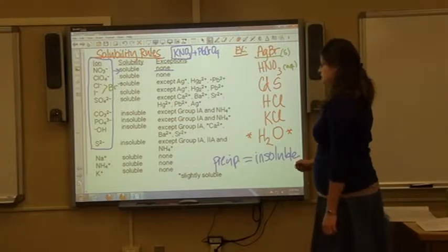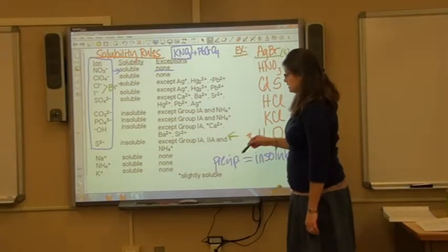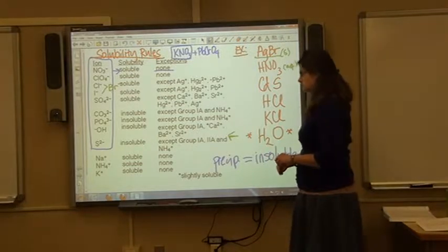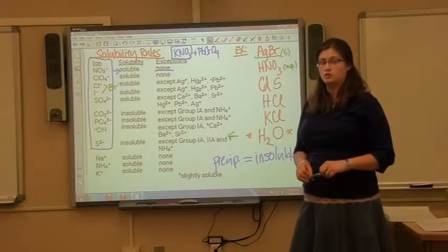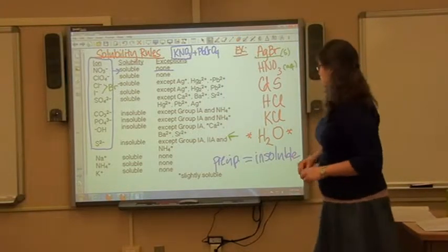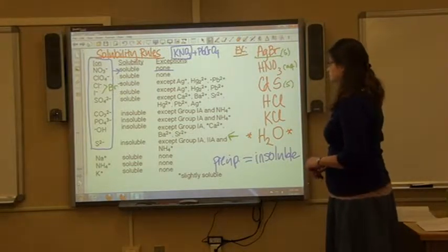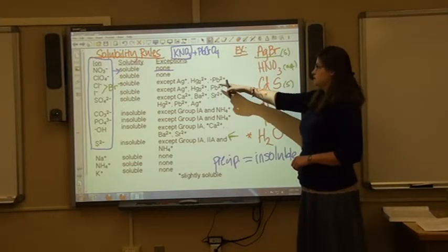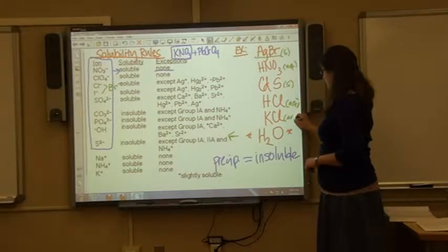For cadmium sulfide: the sulfide row says they are insoluble except for Group 1A, 2A, and NH4+. Cadmium is not in Group 1A or 2A, so cadmium sulfide is insoluble. For HCl: all chlorides are soluble except for a few exceptions — H is not one of those exceptions, so HCl is soluble.